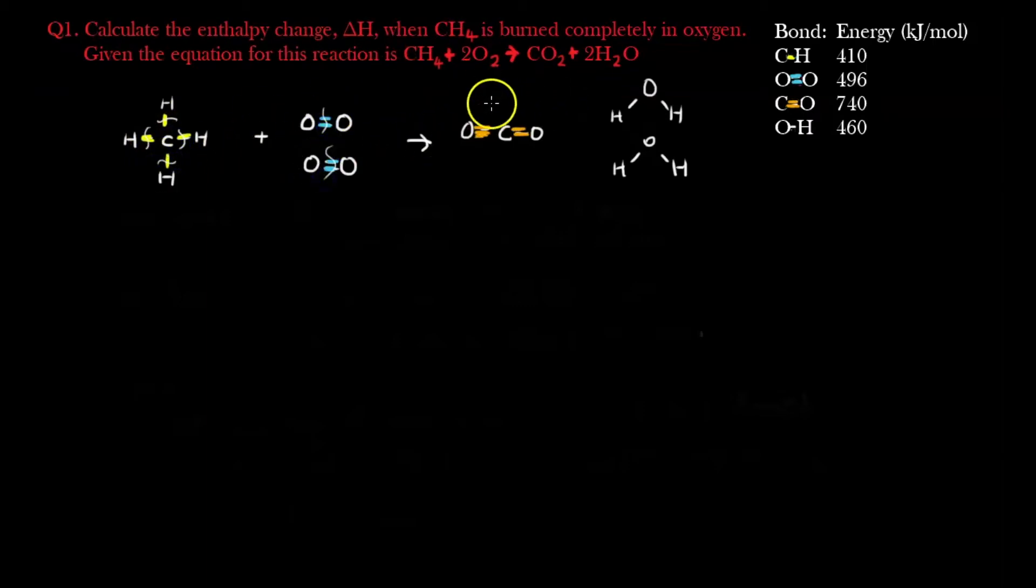Whereas on the other side, this is bonds forming because it's products, so I have to form, and this one maybe I can use green, OH bonds are also being formed. So all OH bonds are being formed, and I have to calculate all this as well. So the first step really is to translate the chemical equation into this structural equation to show you where all the bonds are, because that's very important.